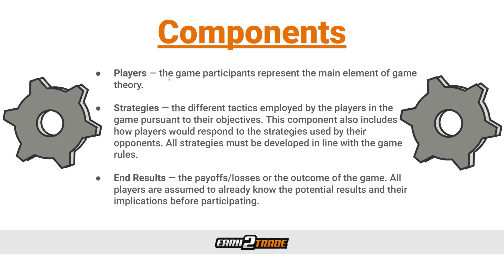The first component is players. Game participants represent the main element of game theory — these are the people that are involved. In the world of trading, other traders are going to be the players. The second component is strategies — the different tactics employed by the players in pursuit of their objectives. This includes how players respond to the strategies used by their opponents, and all strategies must be developed in line with the game rules. The third component is end results — the payoffs, losses, or outcome of the game as a whole. All players are assumed to already know the potential results before participating. As a trader, the end result is obviously greater financial progress or loss of financial progress.